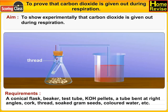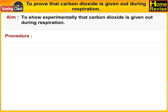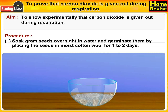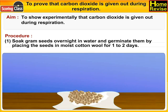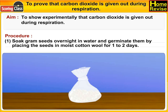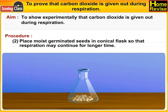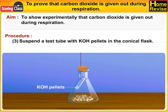Thread, soaked gram seeds, colored water, etc. Procedure: Soak gram seeds overnight in water and germinate them by placing the seeds in moist cotton wool for one to two days. Place moist germinated seeds in a conical flask so that respiration may continue. Suspend the test tube with KOH pellets in the conical flask.